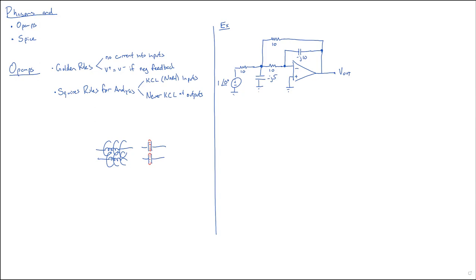Kyle, what would be your next step? Take a look at these golden rules — you're going to use KCL to analyze. Well, first you'd have to figure out the node voltages, primarily the node voltage around the inverting input. Right. You're going to do a KCL, a series of KCLs, and you're going to use these golden rules that say V-plus equals V-minus.